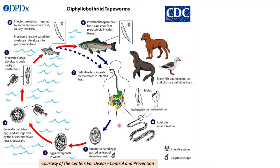The pathophysiology starts with a definitive host, like a human or — in the case of D. latum — dogs and wolves, passing unembryonated eggs in their feces. These eggs enter a water source and embryonate into coracidia, which are eaten by crustacean copepods. The coracidia develop into procercoid larvae within the crustacean, and then a small fish eats that crustacean. The procercoid larva then develops into the infective plerocercoid larval stage within the small fish. A bigger fish eats the smaller fish, becoming infected with the plerocercoid larva.